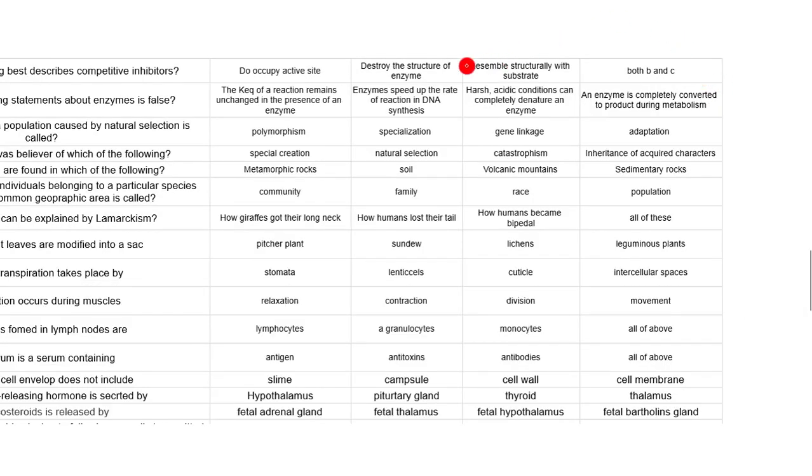Which of the following best describes competitive inhibitors? Competitive inhibitors occupy the active site, yes. They destroy the structure of the enzyme? No. They resemble structurally with the substrate? Yes. And they do occupy the active site. So these are the two answers.